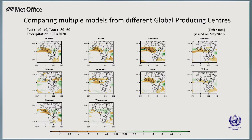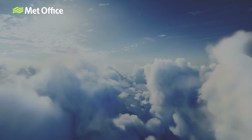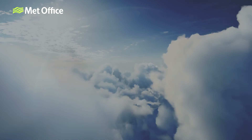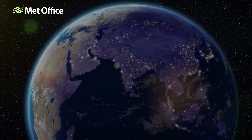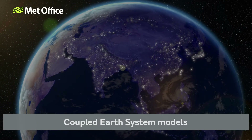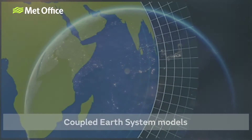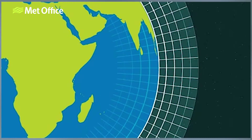The characteristics of these models from the 13 centres varies, and therefore so does the forecast output. For example, some models only simulate the atmosphere, whilst other more advanced models also simulate the ocean, sea ice, and land surface, with the most advanced models being known as coupled Earth system models. The size of the grid boxes used determines the model resolution, and this also varies between models.